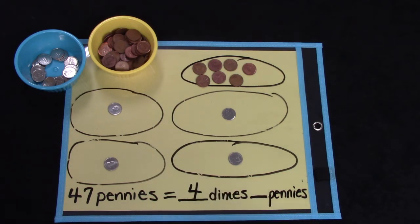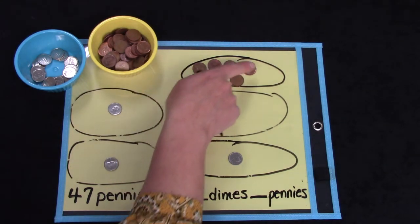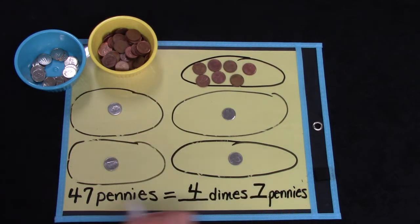How many pennies do I have left over? Count them with me. 1, 2, 3, 4, 5, 6, 7. 47 pennies equals 4 dimes and 7 pennies.